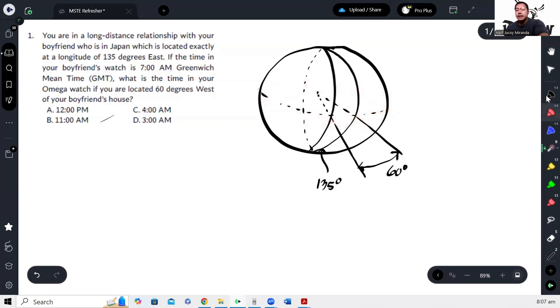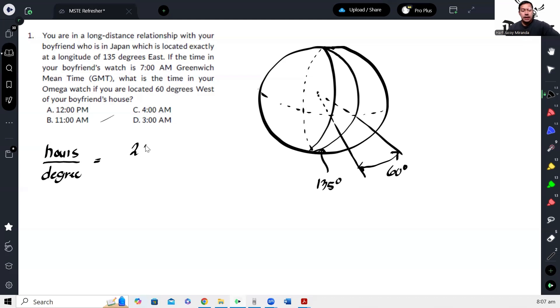Okay, so that means the change in time per degree can be calculated. We can calculate the change in hours per degree of longitude, and that is simply 24 hours in one day divided by 360 degrees in one complete day.